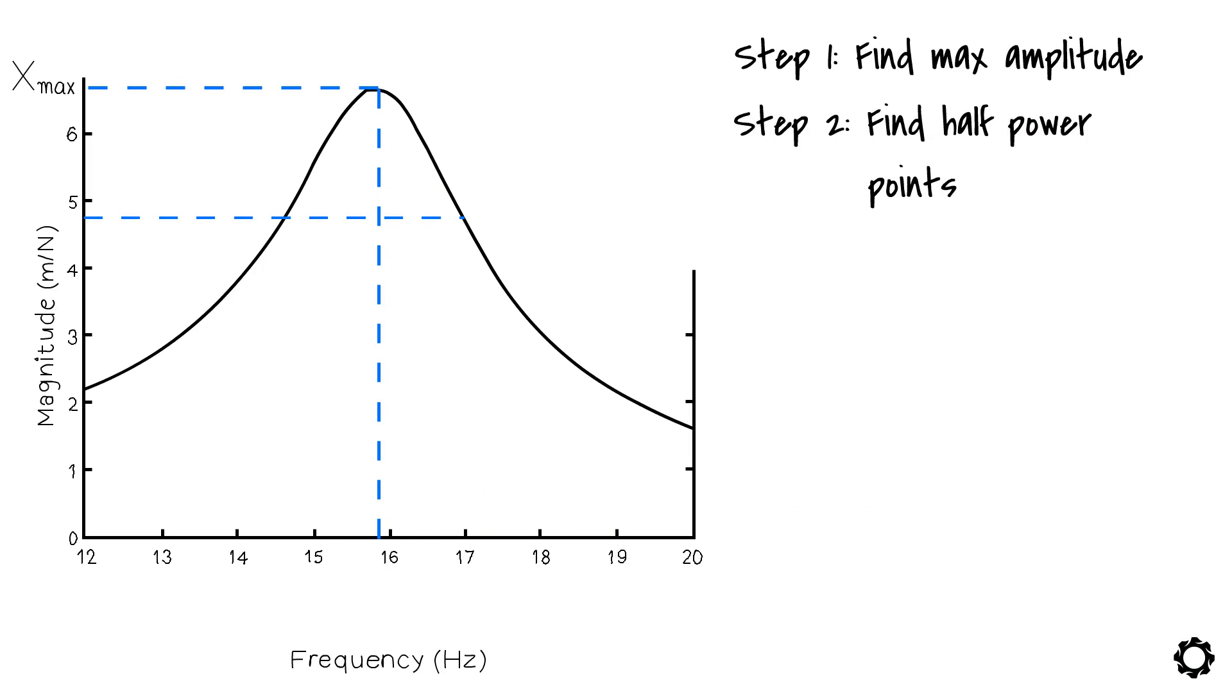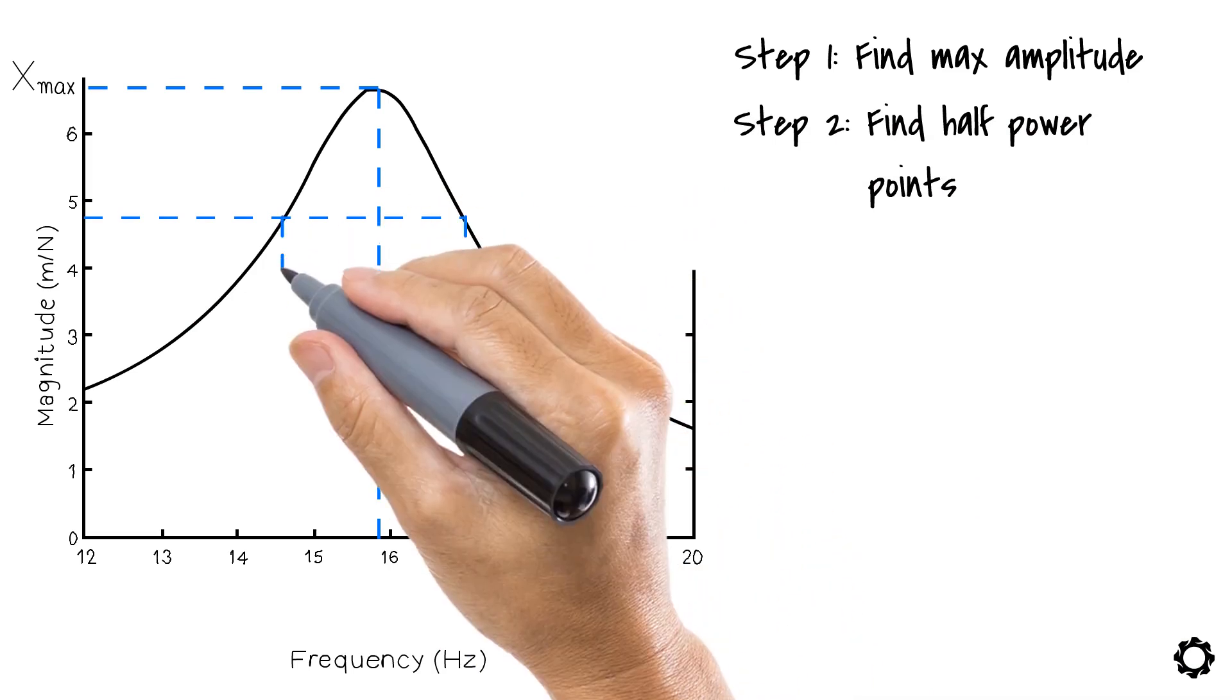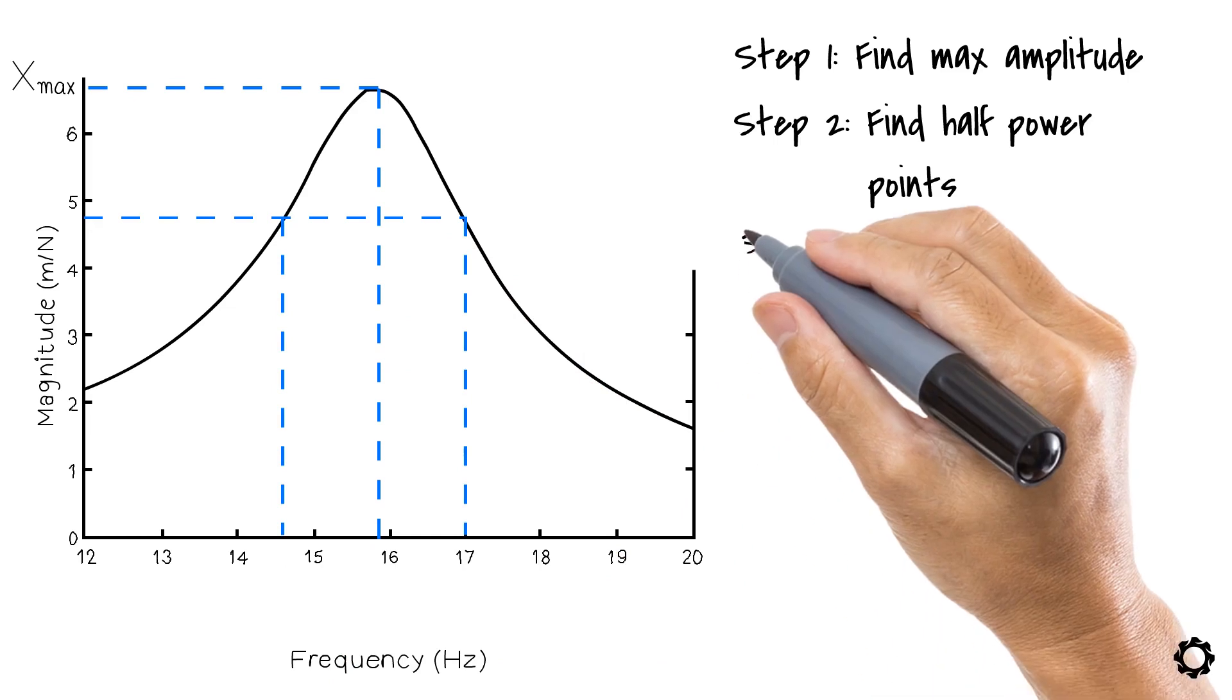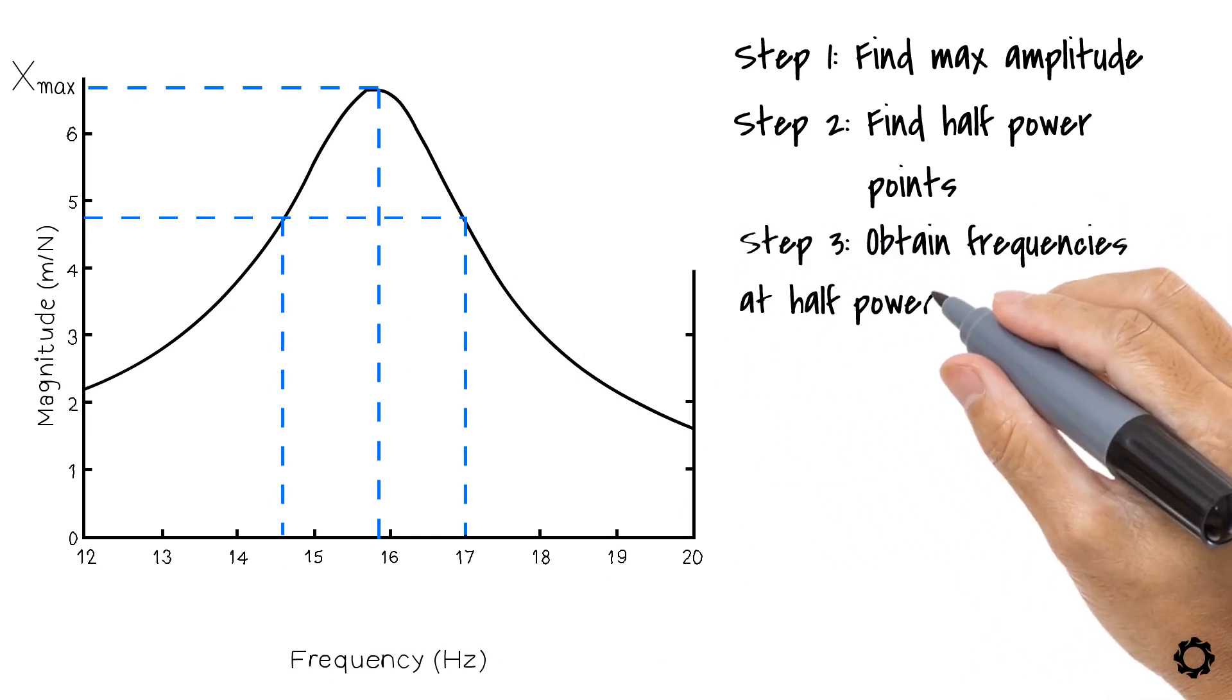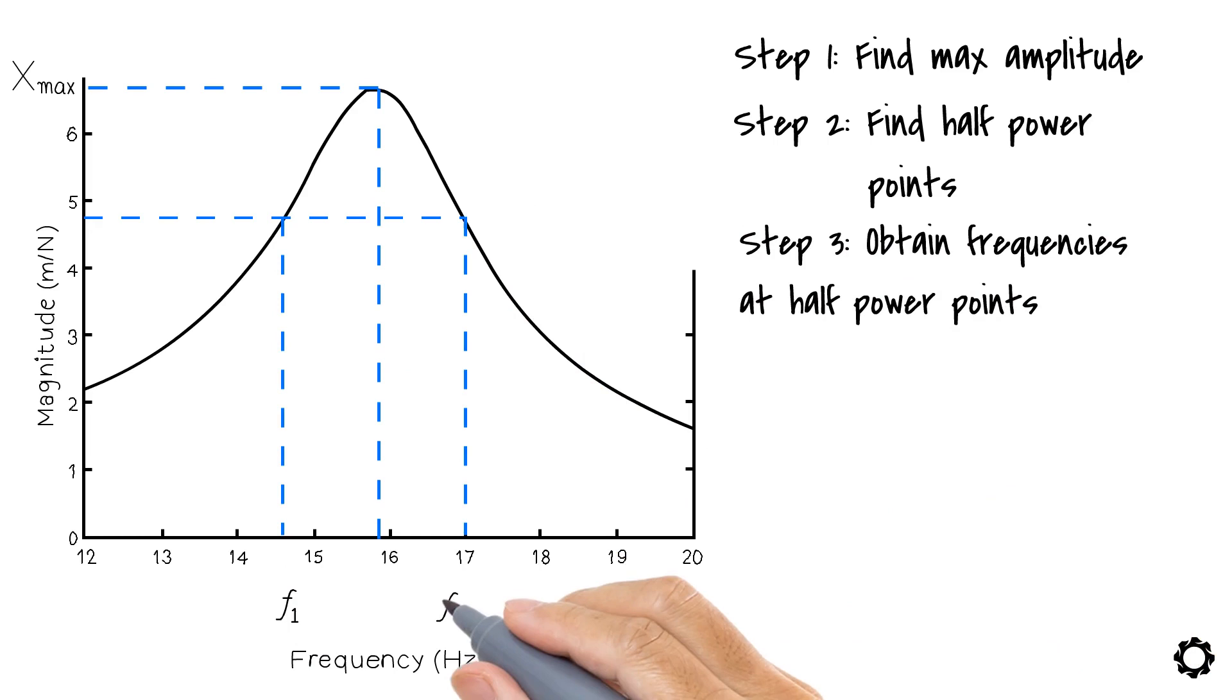Once those points are identified, we need to draw a vertical line straight down to the x-axis to obtain the frequencies at those two half power points. Let's name these points F1 and F2.